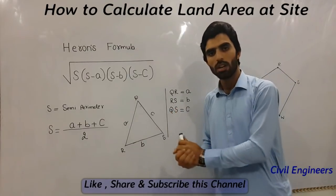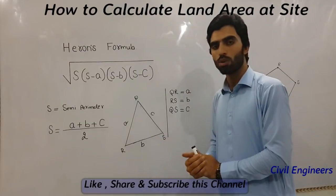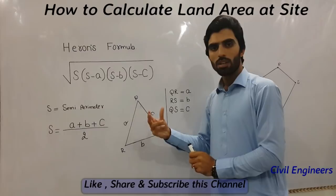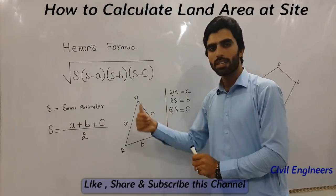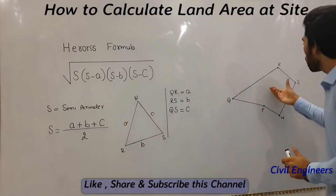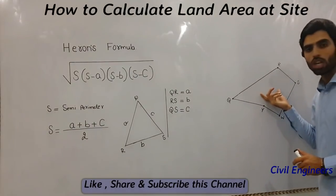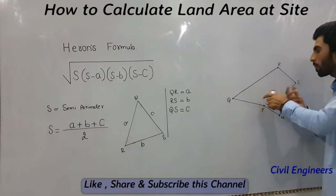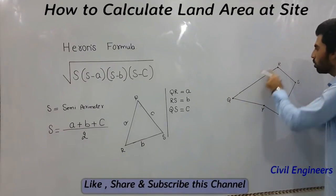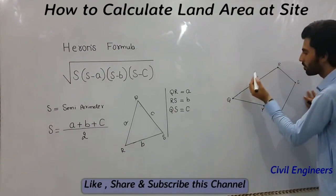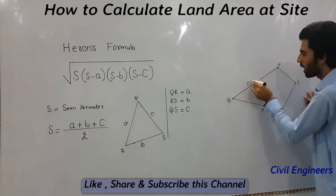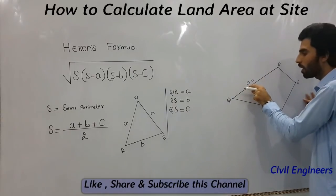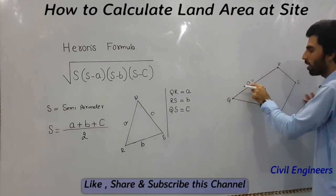There are some applications on Google you can download, but this is the manual method you can use to find out the area at site. Now this is the close traverse and I have to find out the area of this traverse. For example, QR length — QR becomes A, same as before.